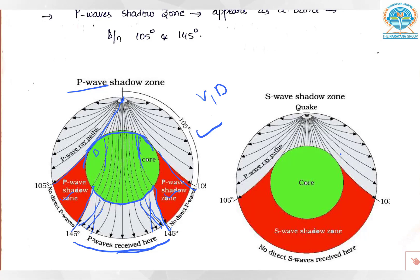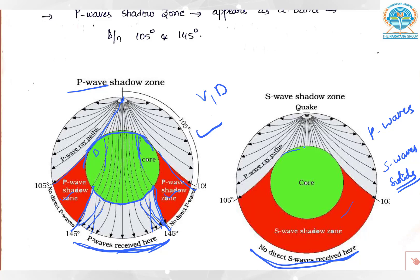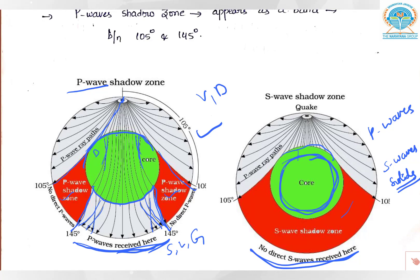For S waves, up to 105 degrees everything was normal, but after 105 degrees no more S waves were detected. Unlike P waves which reappear after 145 degrees, S waves have no direct waves beyond 105 degrees. The reason: S waves can travel only through solids. So they could not enter this region, meaning there is some liquid region in the core. S waves' shadow zone is much larger than P waves' shadow zone. This is how we understood that the outer core is liquid.